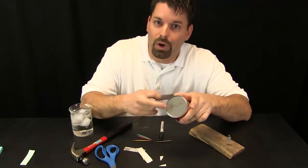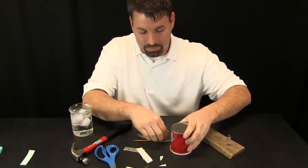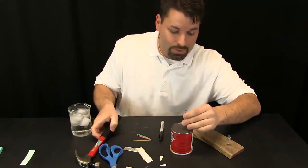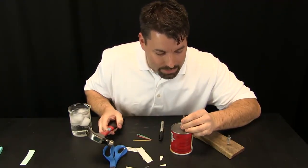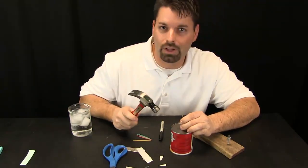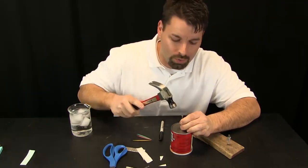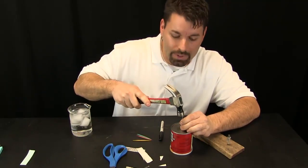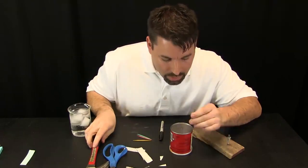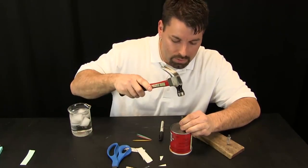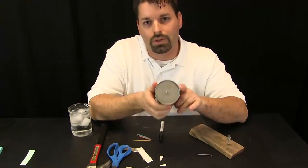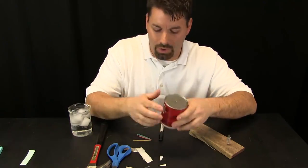Now I need to actually poke a hole in my can. So I am going to use a nail and a hammer to do that. I want to try to get it in the center, and I am not going to drive the nail all the way through. I just want a small hole. So I am going to tap it, tap it again, make it a little bigger. You can see we have a start of a small hole.